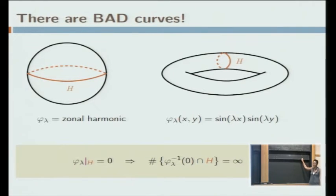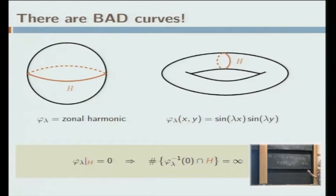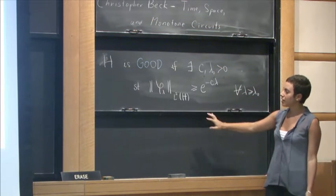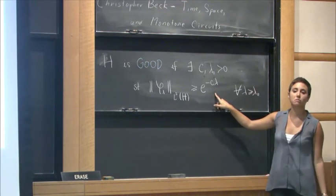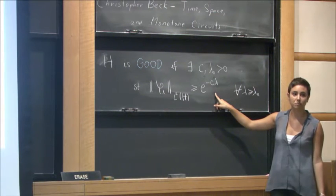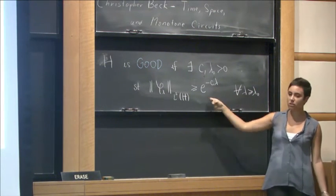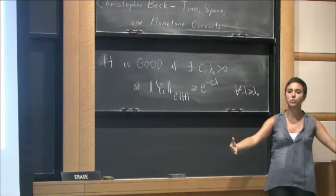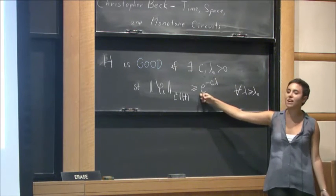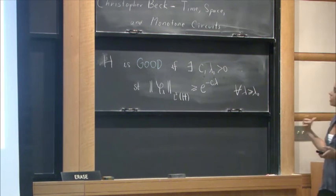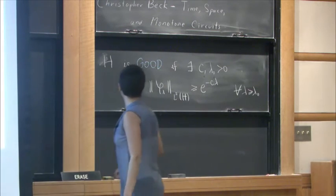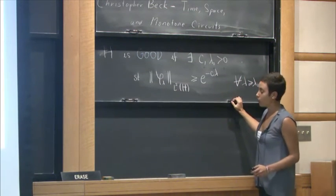In order to do that, Zelditch and Toth introduced the notion of what a good curve is. A good curve for my problem is going to be a curve for which I can find two constants, c and lambda 0, such that whenever I restrict my eigenfunction to the curve, the L2 norm of that restriction is going to be bounded below by an exponential function that is decaying with lambda as lambda goes to infinity. So what this condition is telling you is that you can allow your eigenfunctions to go to 0 over your curve, but they cannot go to 0 faster than a decaying exponential. And this condition turns out to be a very nice condition if you want to work in understanding this number of intersections.